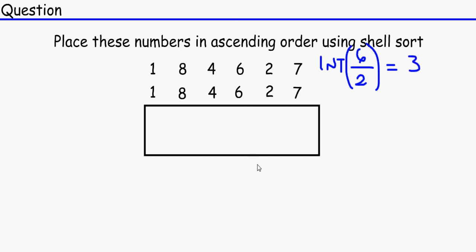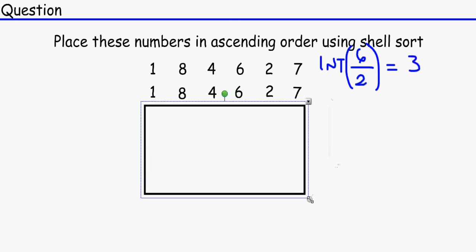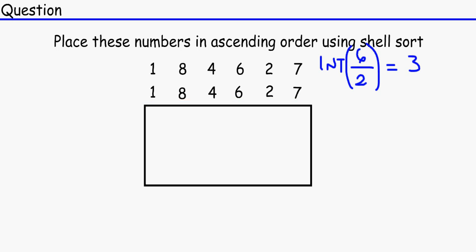And that would make three. So that would make three sublists we need to create. So what we're going to do, we're going to write it in three sublists. Let's say this is the first sublist, this is the second sublist, and this is the third sublist. So we've got one, eight, four, six, two, seven. Easiest way to remember it, you always go down diagonally when you're writing down the sublists.